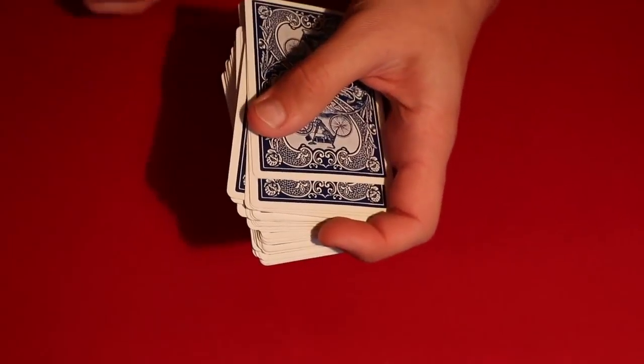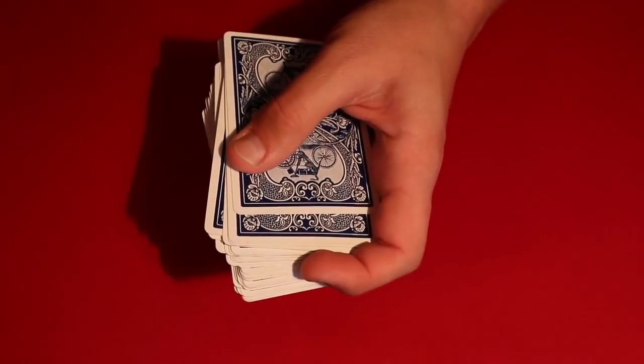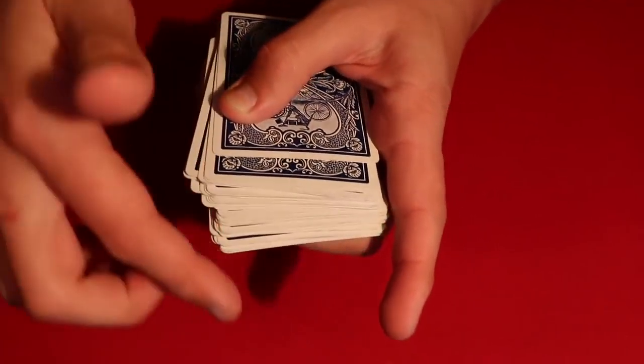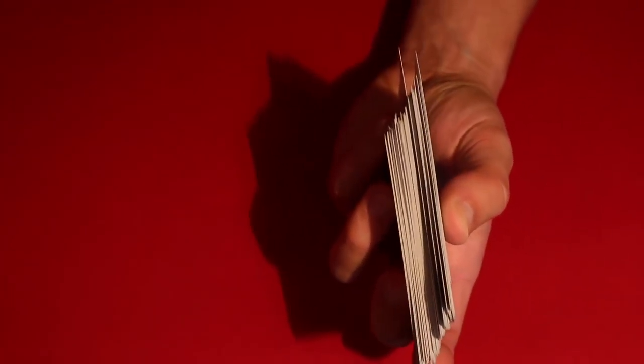And then what you do, you can continue to overhand shuffle the cards to make it look like the cards are kind of leaning in this direction. That way they can't see from the top that you actually have this out-jog card right here.